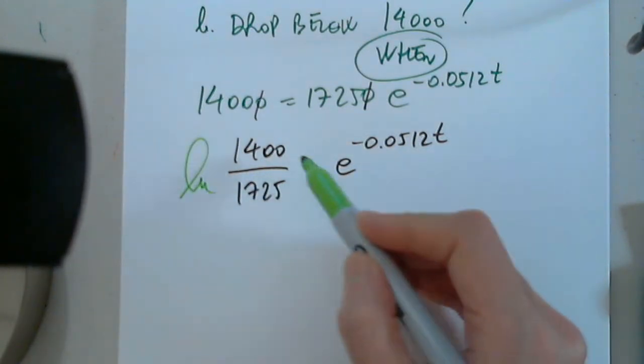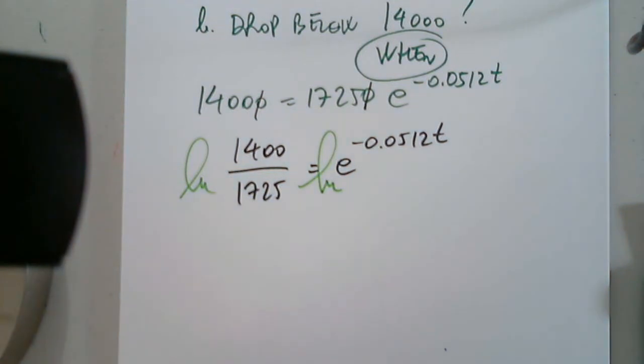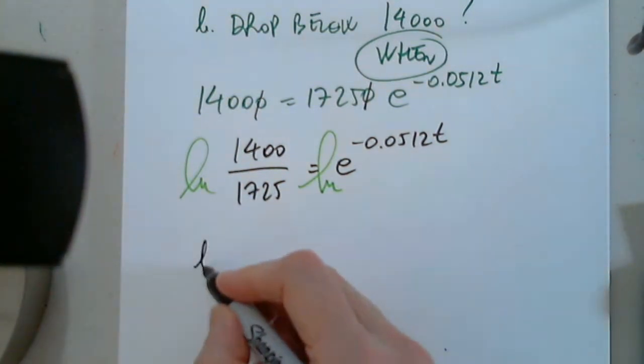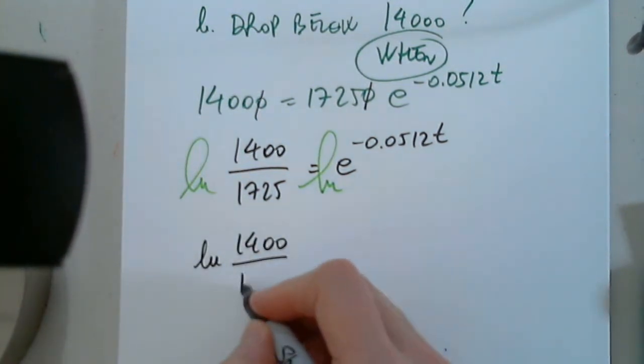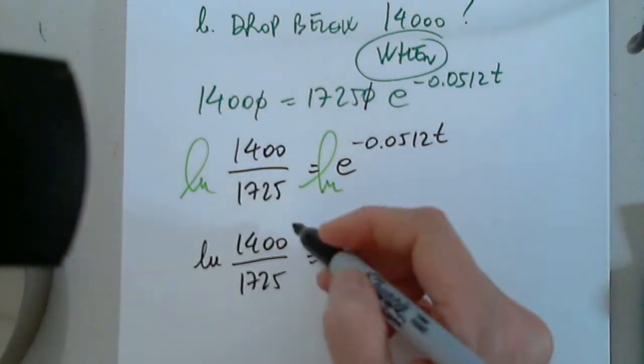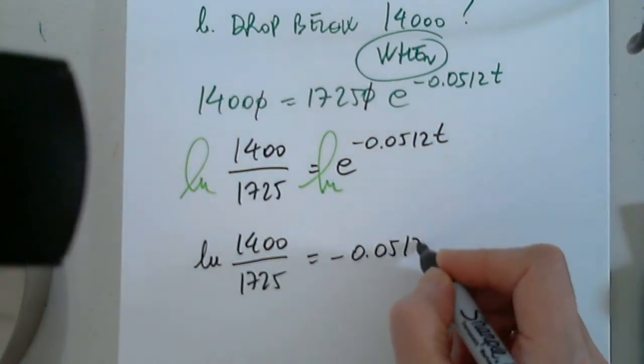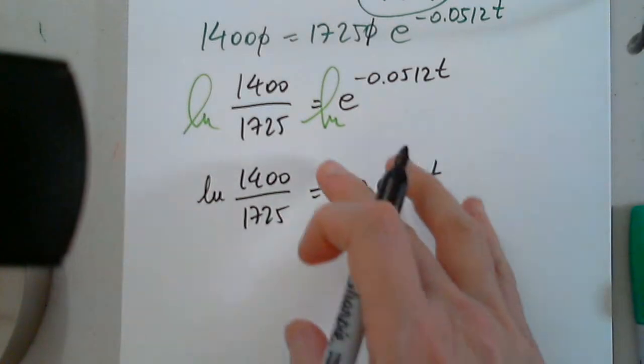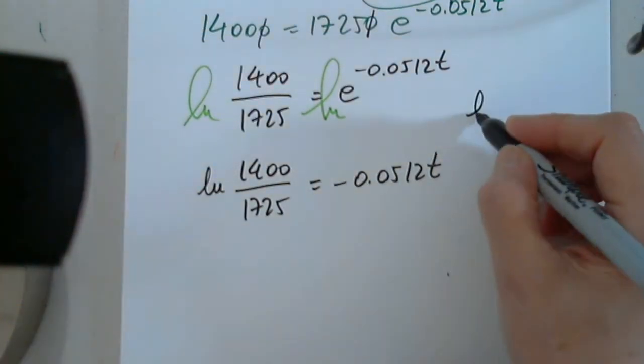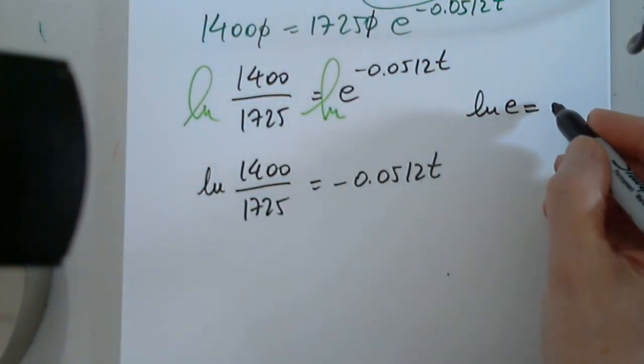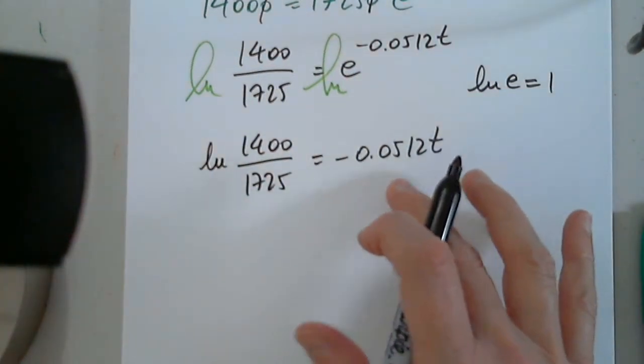Put natural log on both sides. Absolutely. Thank you very much. So I have natural log 1400/1725 equals -0.0512t because natural log e is one. And I divide by this number.